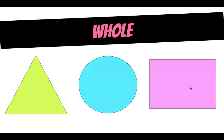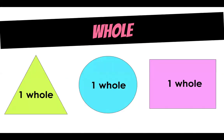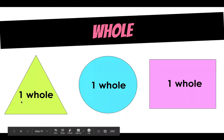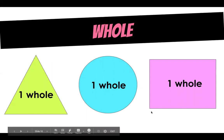A whole is a whole shape or a whole object — we have not broken it up into any pieces or fractions. One whole is just one part. As you can see here, we have one whole triangle, one whole circle, and one whole quadrilateral.